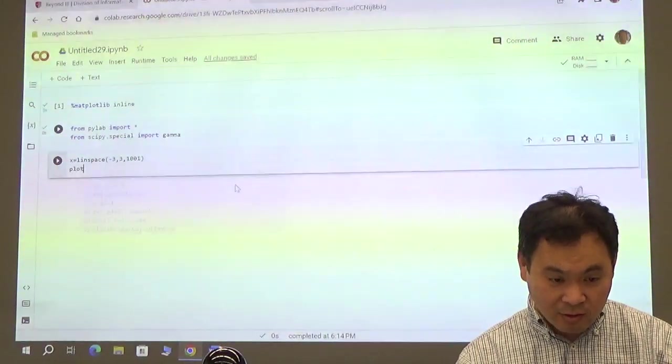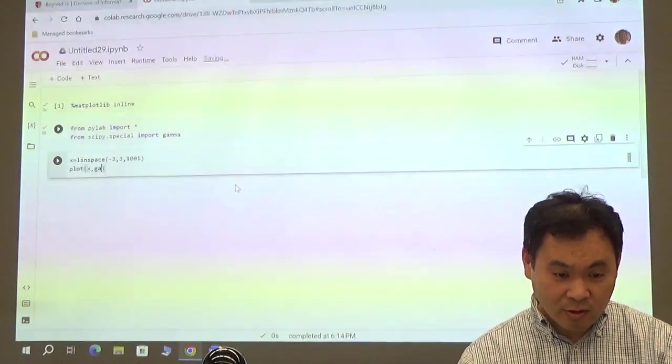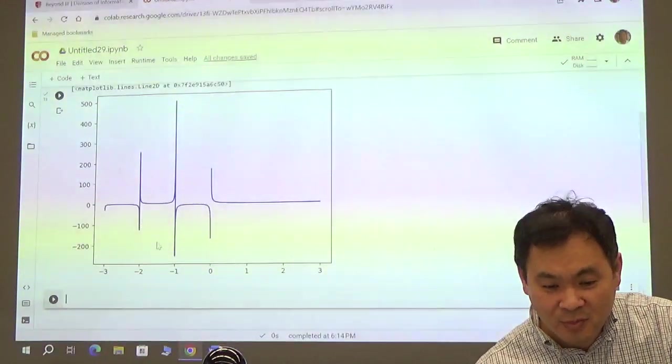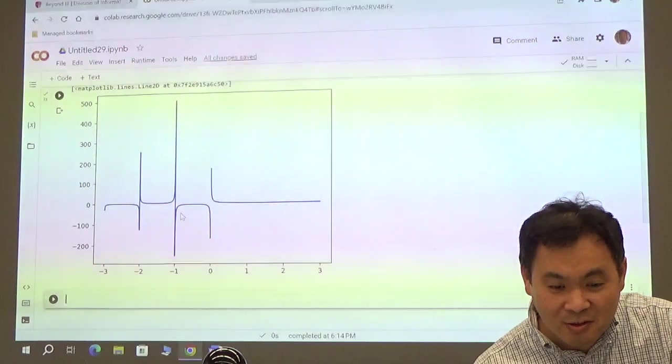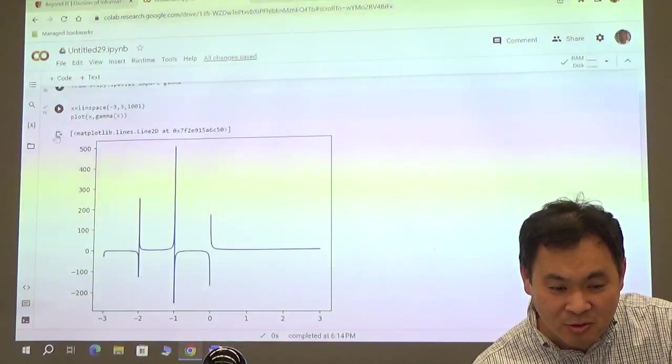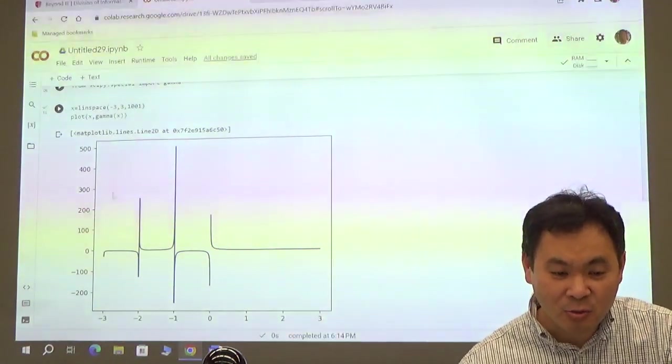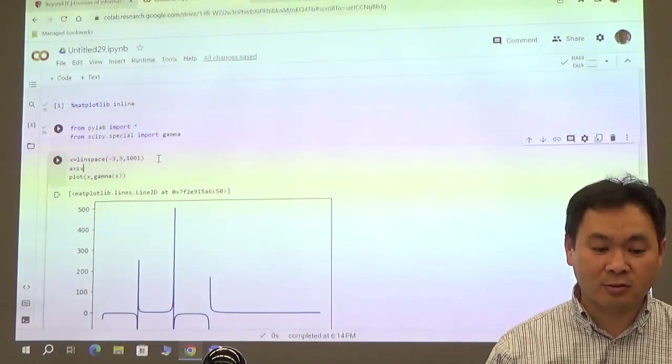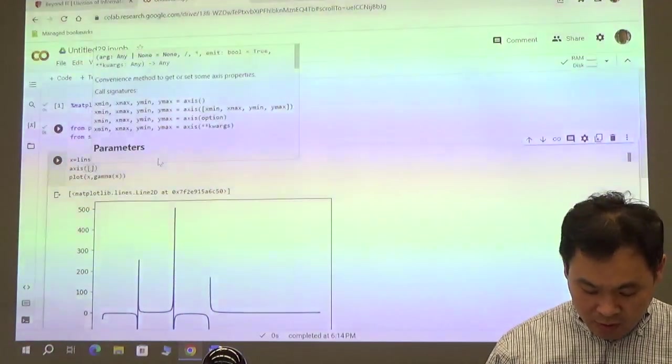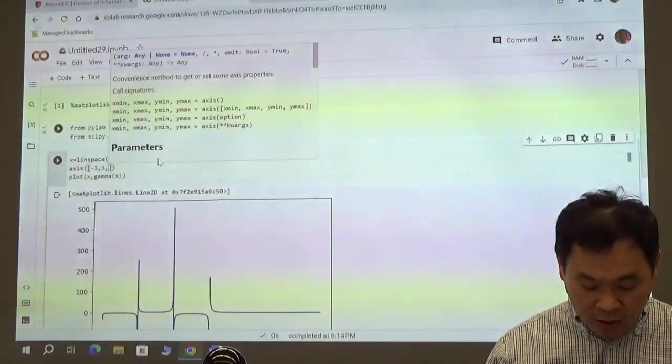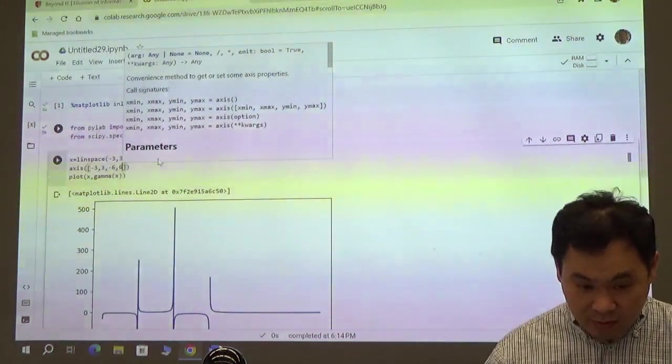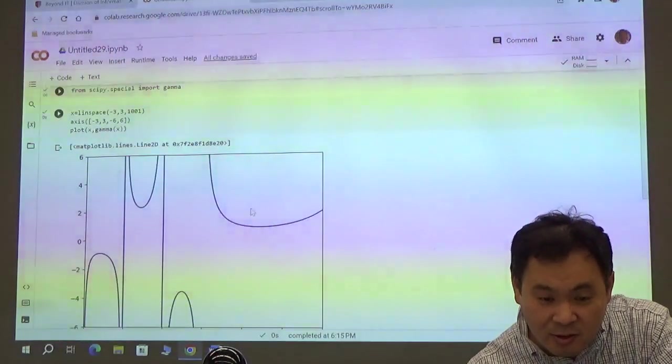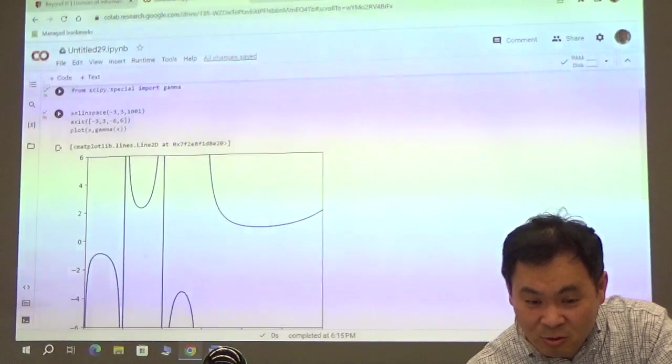And we are going to plot gamma of x. That doesn't look very good because the values become really large, right? So I think what we should be doing is let me limit the axis. So axis, I want the axis to be from negative 3 to 3, but the y-axis I want it to be from negative 6 to positive 6. So if I draw it like that, then yeah, that's more like it. This is 0, okay?